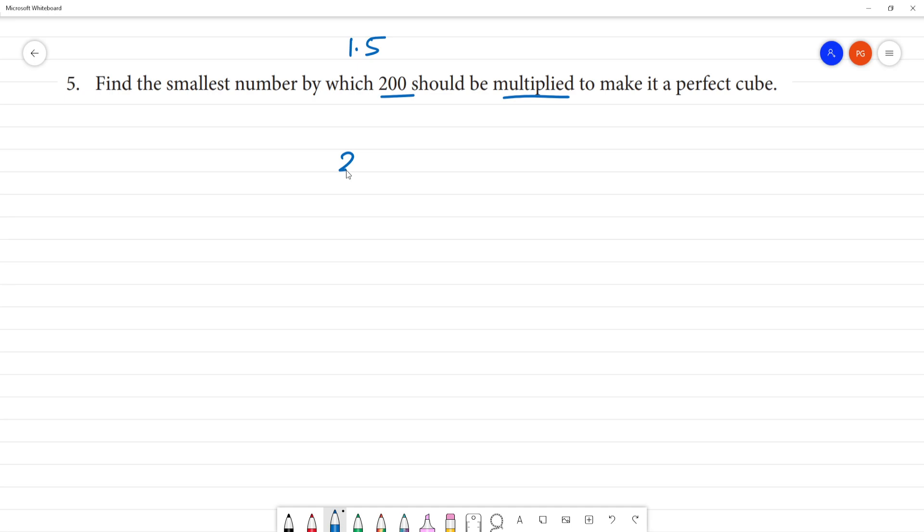Now, let's look at 200's prime factorization. Look at 200, divide by 2 is 100, divide by 2 is 50, divide by 2 is 25, and then 5 goes into 25, and 5 will make it 1.